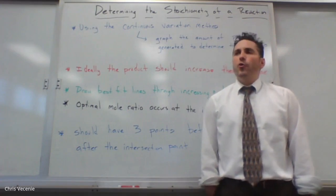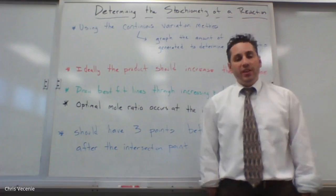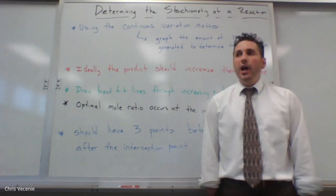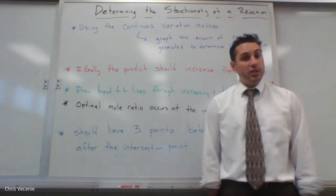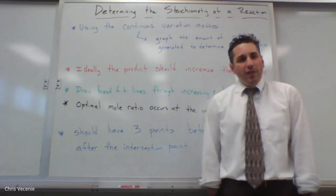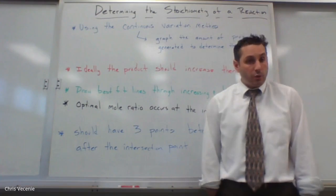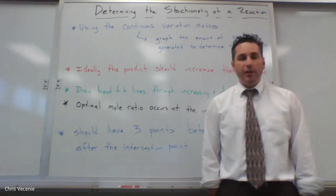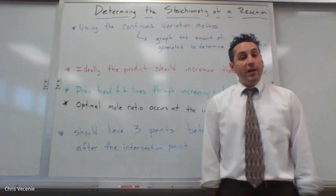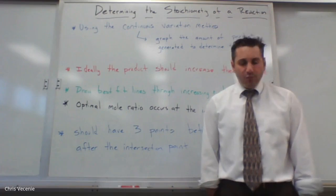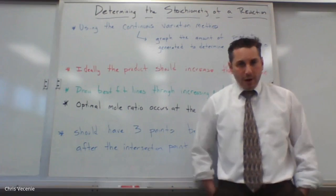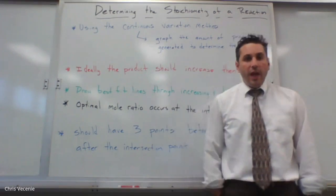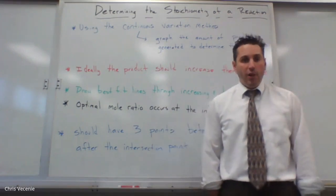One of the methods they came up with for determining the oxidation state of transition metals — you know how in the middle of the table they can carry +2 or +3, and it all depends on what happens with their 3d electrons — one way they found to figure out that ratio was by doing an experiment called the continuous variations method, and that's what today's lab is all about.